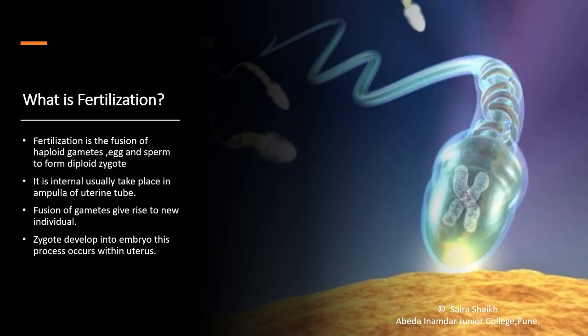In fertilization, it is the fusion of haploid gametes — egg and the sperm. The fusion of egg and the sperm gives a diploid zygote structure. In the case of human beings, the fertilization process is internal; that is, it is taking place inside the female body, particularly in the region of the ampulla, which is the part of the uterine tube. The fusion of the gametes gives a new individual.